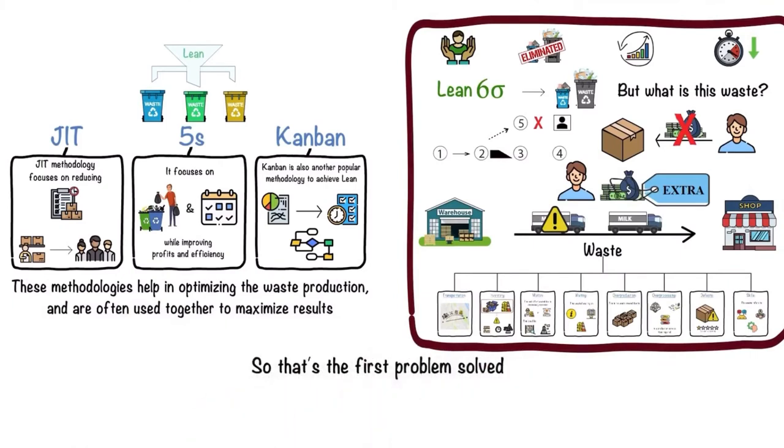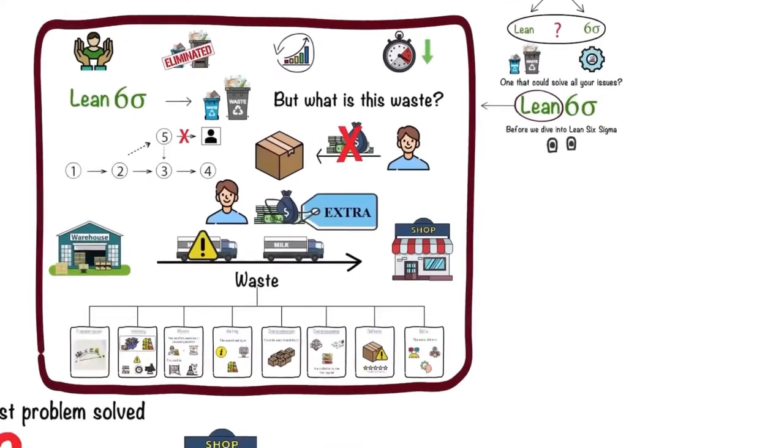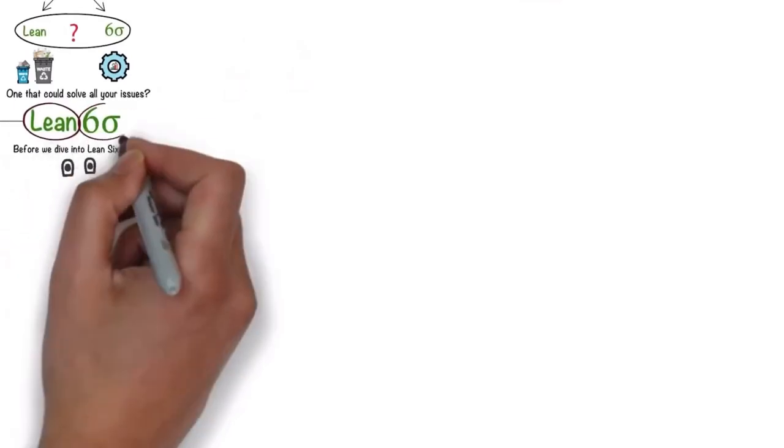So that's the first problem solved. Now let's have a look at how you can improve the supermarket's supply chain efficiency. For that, let's have a look at the other part of Lean Six Sigma: Six Sigma.